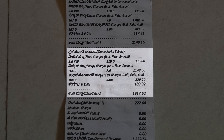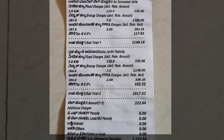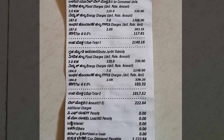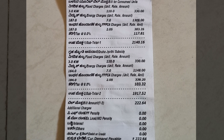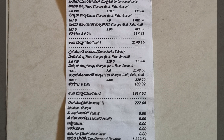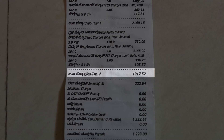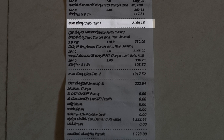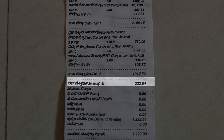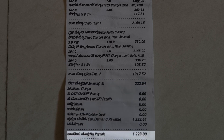Now you can see a new component added: Griha Jyoti Subsidy. It calculates the same way — the 164 units you are entitled to use for free, at 7 rupees per unit, comes to 1,148 rupees. They have subtracted 1,917.52 from 2,140.16, and the difference is 222.64 rupees. So you will be entitled to pay 223 rupees on your electricity bill.